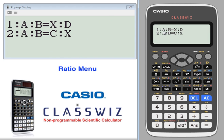You have two choices: a ratio of A to B and X to D, or a ratio of A to B and C to X.